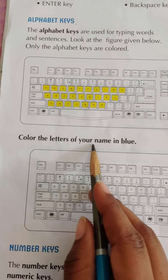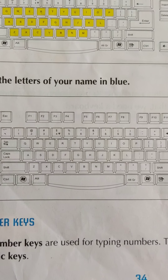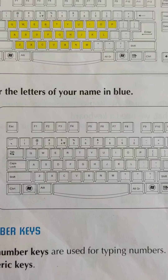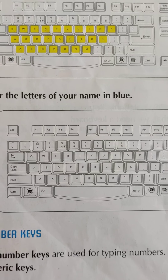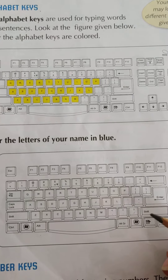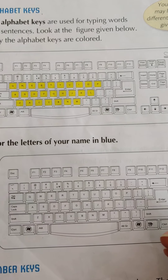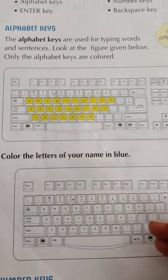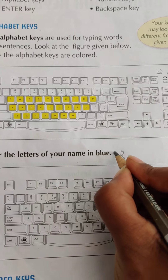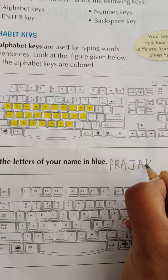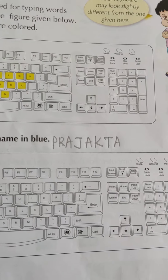Color the letters of your name in blue. A keyboard is given here — from that, find the letters of your name and color them with blue color. For example, my name is Prajakta. The spelling of Prajakta is P-R-A-J-A-K-T-A.